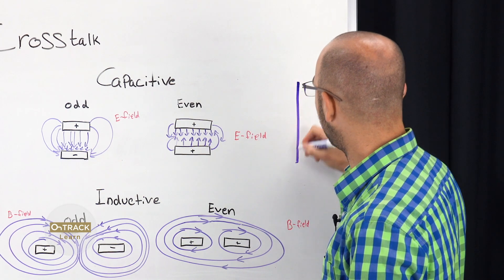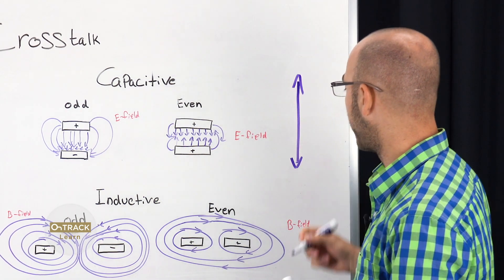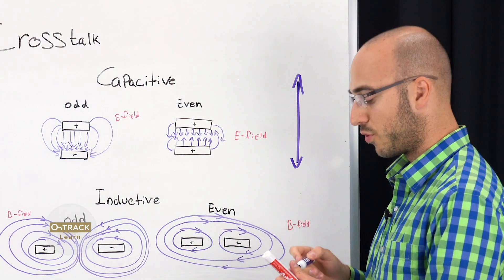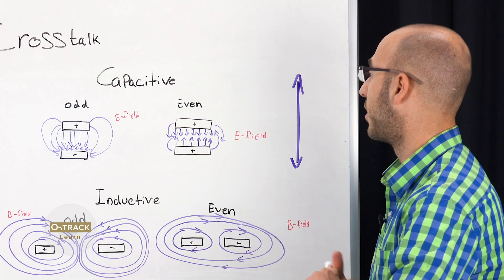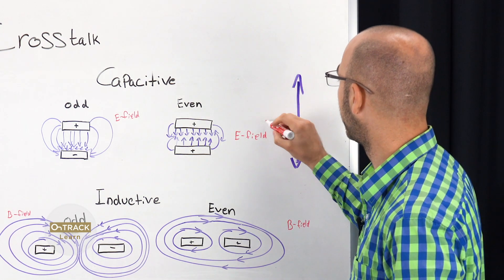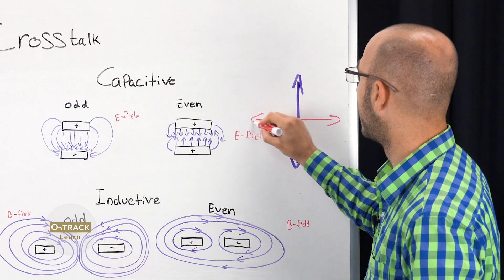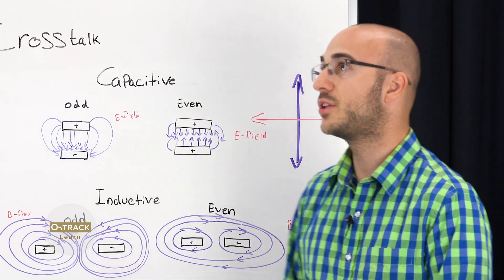So, let's say on the top layer, you want to have traces going north-south. And on the adjacent layer, you want to have it going east-west.